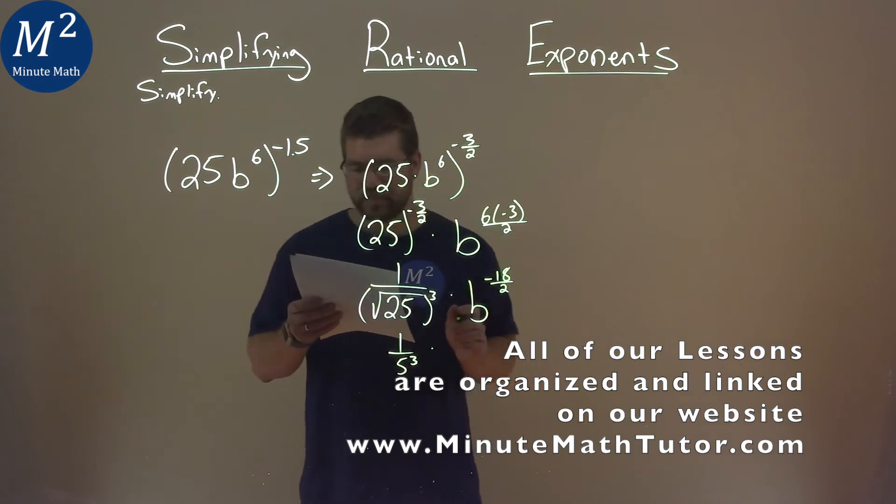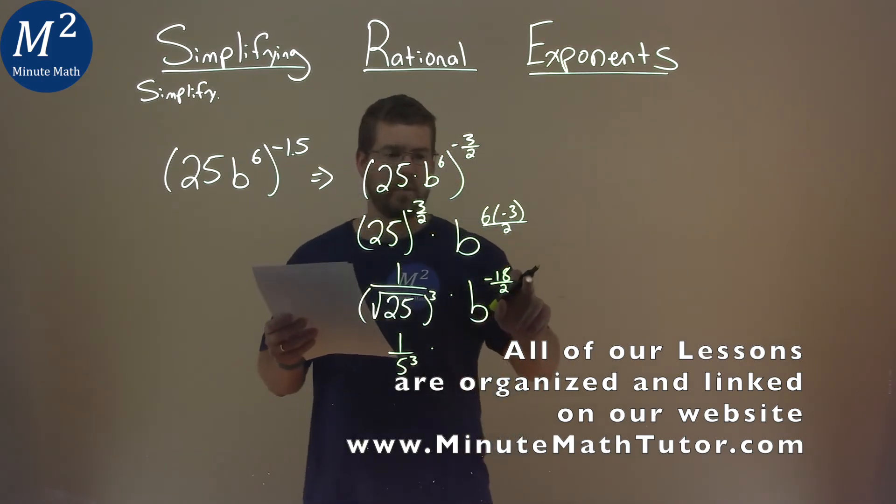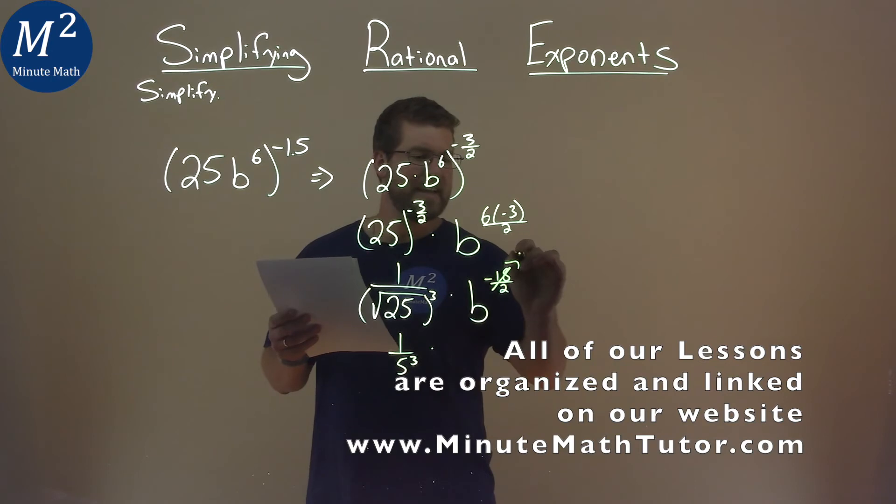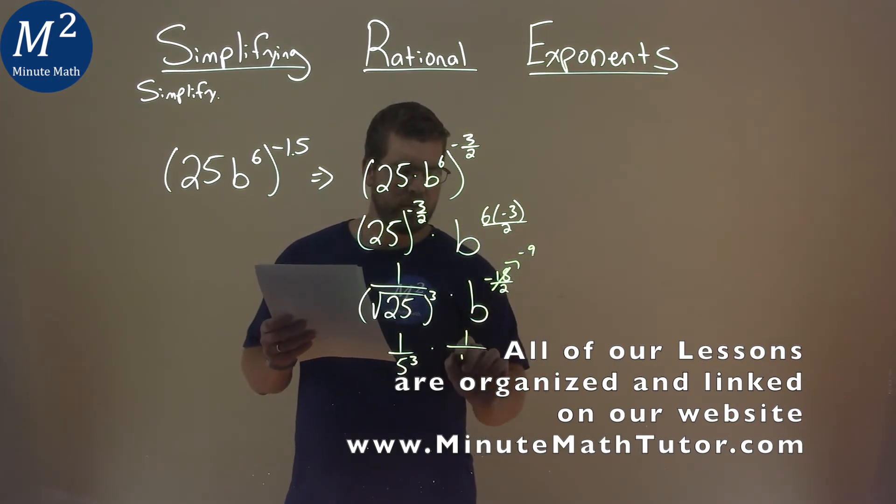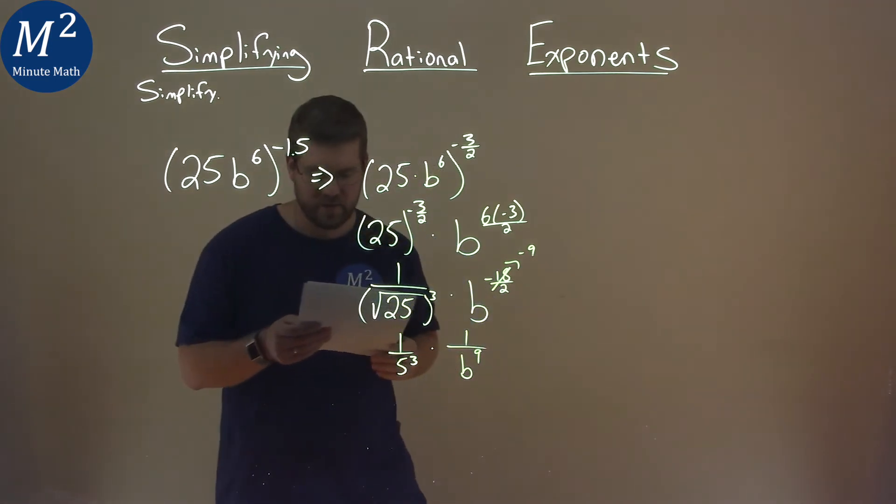Hopefully we can kill two birds with one stone here. Negative 18 over 2 is a negative 9, then we can put this as 1 over b to the positive 9th power.